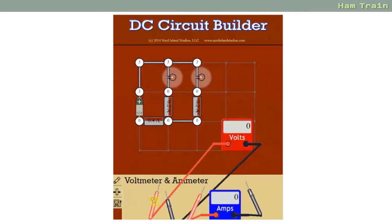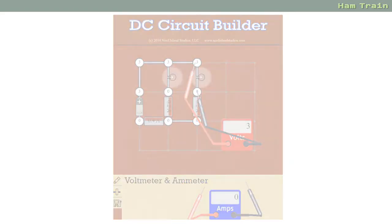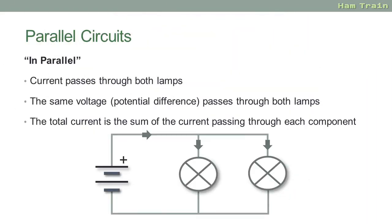Let's look at our meter again. If we put the probes across the second lamp here, 3 volts. So let's recap on parallel circuits. The current passes through both lamps. The voltage is the same, so for a 3 volt battery you'd see 3 volts across the first lamp and 3 volts across the second lamp. And the total current going through the circuit is the sum of the currents going through the individual components.